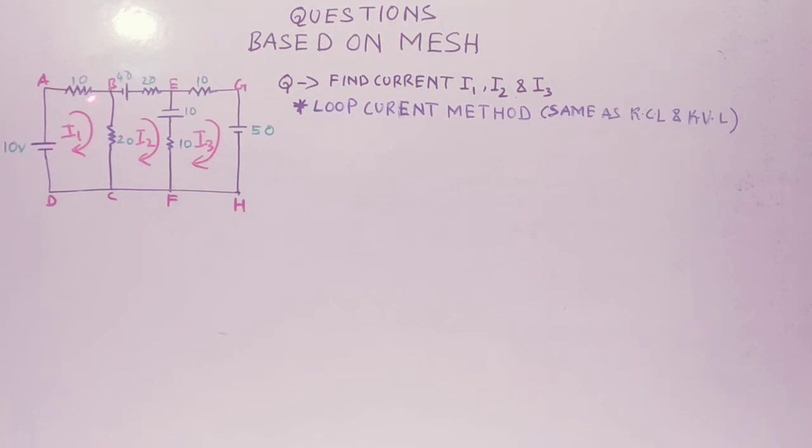Now you can look at this figure. ABCD is one mesh, BEFC is another mesh, EGHF is another mesh. Now if someone asks to find the value of current between B and C, I have taken this in clockwise direction. Again this is in clockwise direction, then I will write it as I1 minus I2.